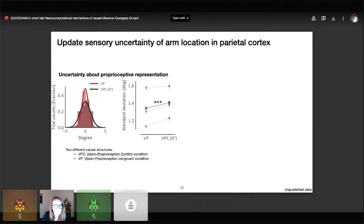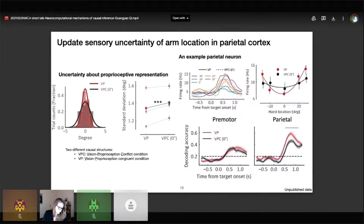Finally, we found that there is a trade-off between inferred causal structure and sensory uncertainty. The uncertainty of proprioceptive representation in VPC condition is lower than that in V-P-C condition. The monkey's behavior shows that the uncertainty in VPC condition is lower. At a single neuron level, we found that the tuning curve of VPC condition is disturbed relative to V-P-C condition, and only parietal cortex could update the sensory representation.